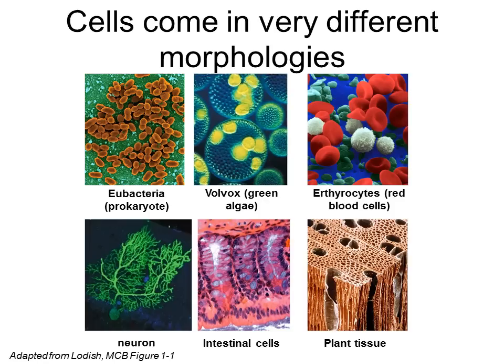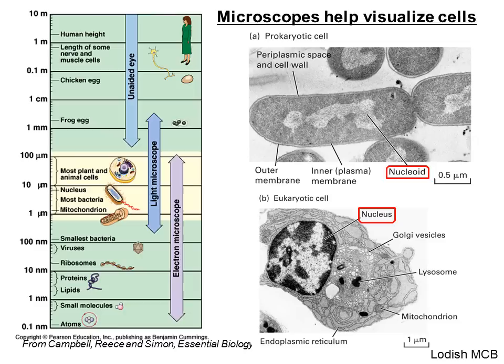A neuron has one cell nucleus with a long axon followed by dendrites. Intestinal cells will form a tissue with crypts and villi, and plant tissue will also be composed of multiple cells to give that plant structure and stability.